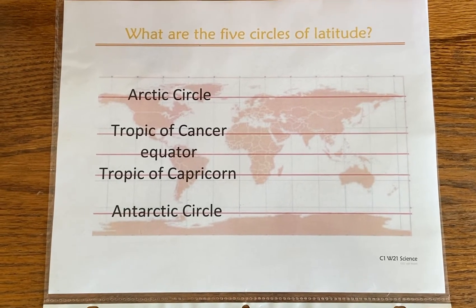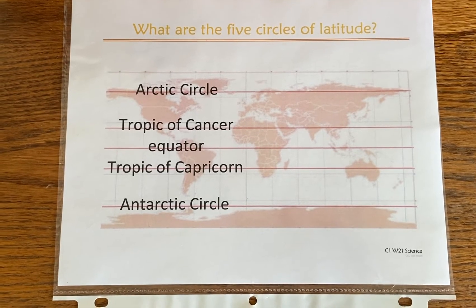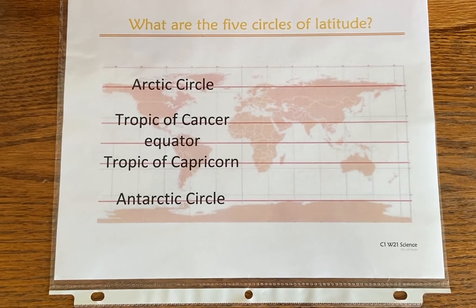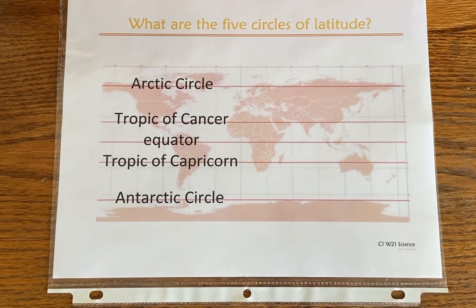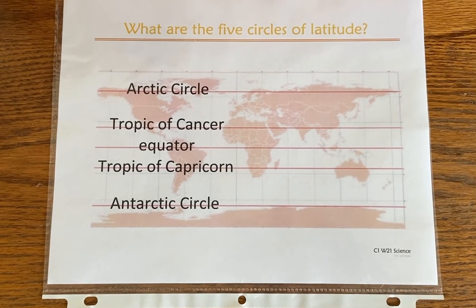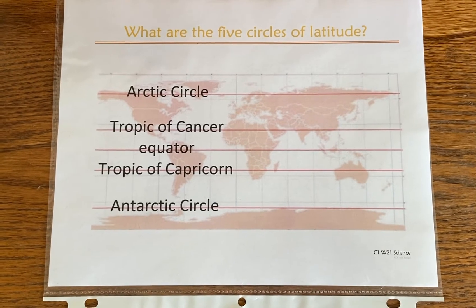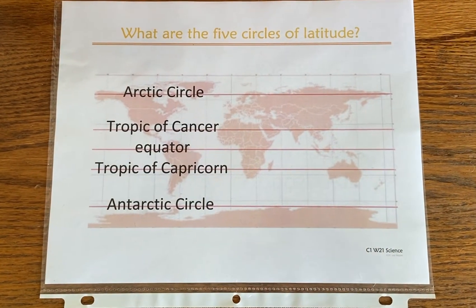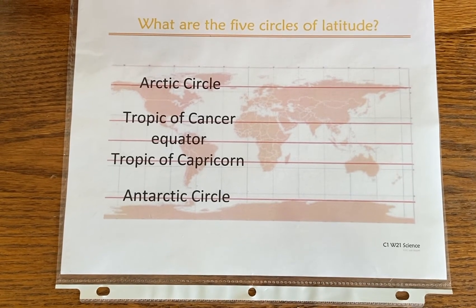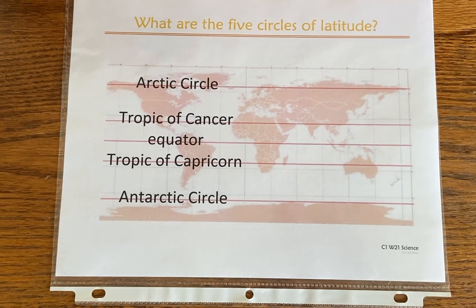What are the five circles of latitude? These are the five circles of latitude: Arctic Circle, Tropic of Cancer, Equator, Tropic of Capricorn, Antarctic Circle.